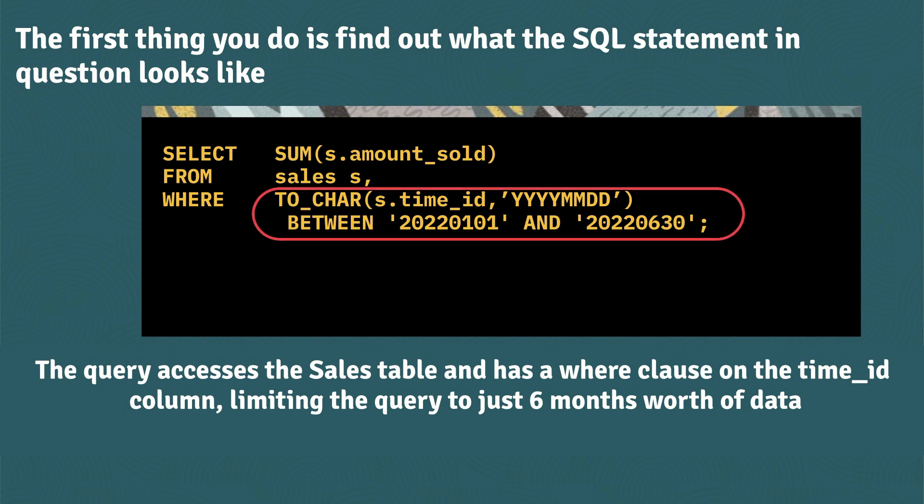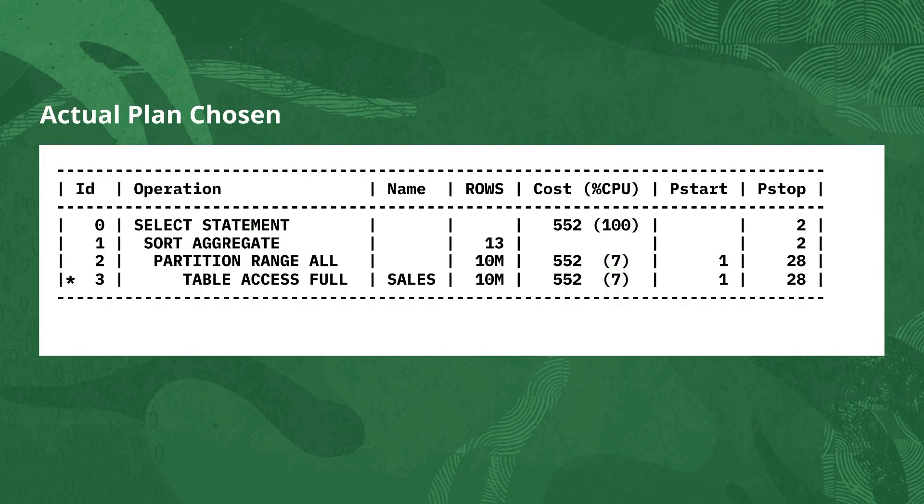And we see there is a where clause predicate on the time_id that should limit it down to just six months worth of data. So why aren't we getting the pruning we expected?